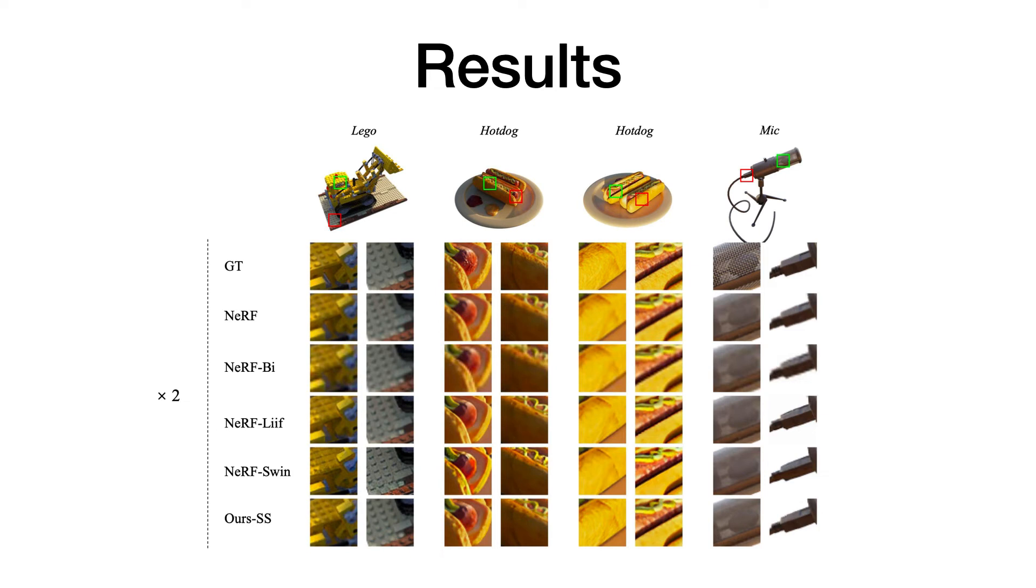NeRF-LIIF can recover some details but lacks enough texture. NeRF-Swin has the second-best LPIPS providing good visual quality but cannot compete with NeRF-SR in PSNR and SSIM since it predicts false geometry, as we can see from the Lego model here.